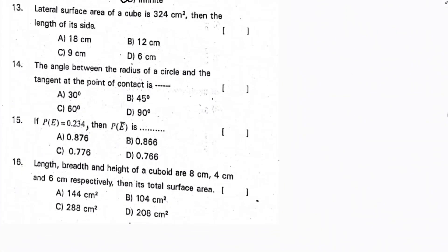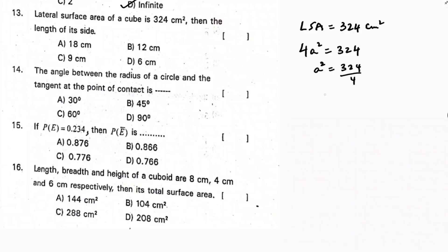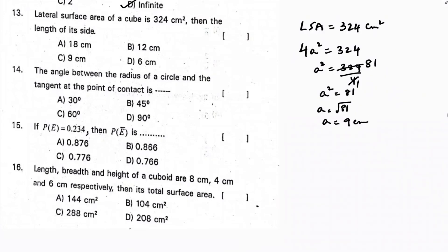Next: the lateral surface area of a cube is 324 cm². LSA of a cube = 4a² = 324, so a² = 81, and a = √81 = 9 cm. Correct option is C.